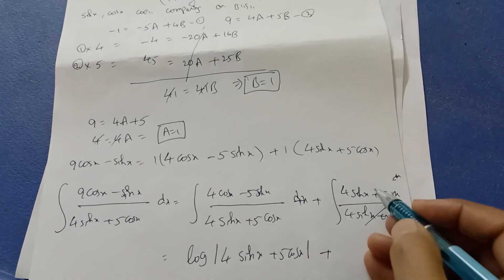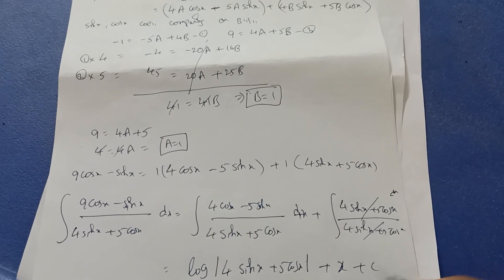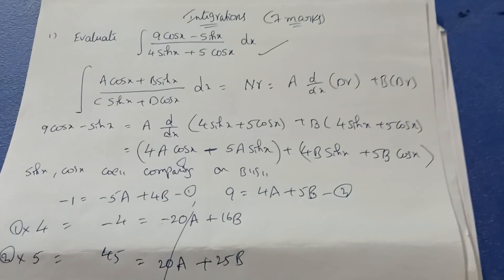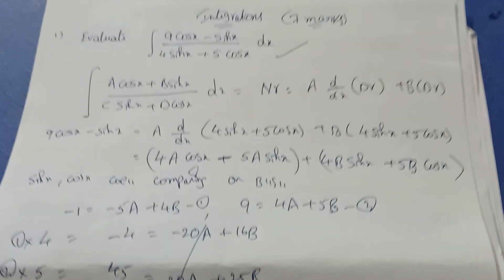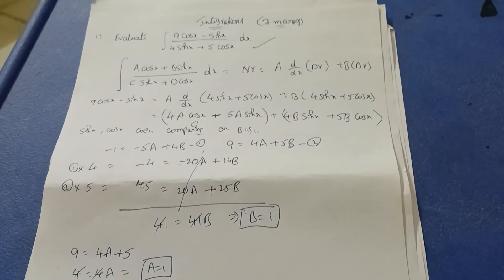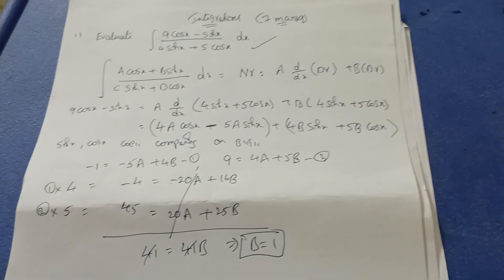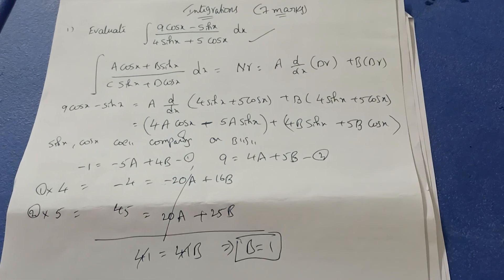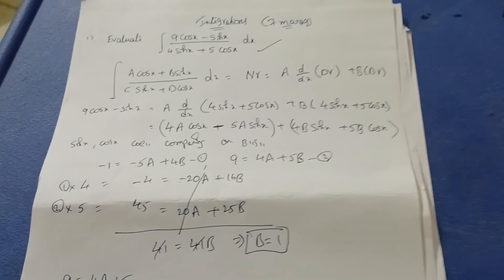So the full term cancels and integration of 1 is x, plus constant. That is the complete procedure for this type of question. Don't make any mistakes — it is a simple method and you can easily get 7 marks. Also check my earlier videos for all reductions. Thank you, all the best, bye.